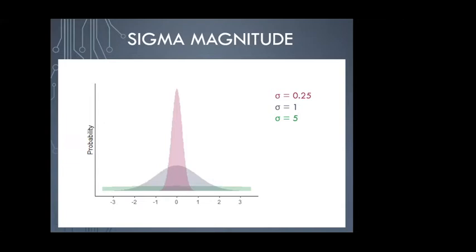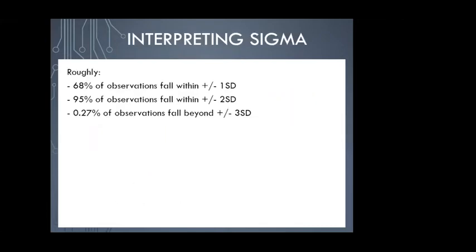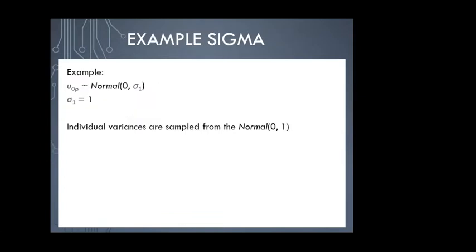All of these random variances have means of zero, so they vary around the intercept. This means the intercept takes on the meaning of being the average log odds of getting it right — for the average person from the average school on the average question. To parametrize the model, we select the sigmas because we create the deviates by randomly sampling from a normal distribution using rnorm. Note that in the logistic model, everything is in log odds units — the intercept, effects, and variances are all in log odds units.